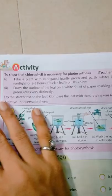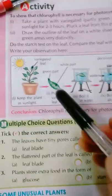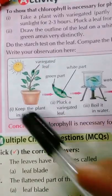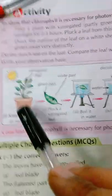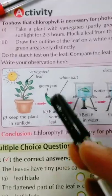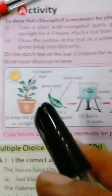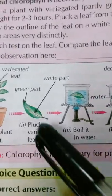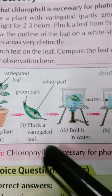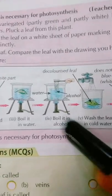The next activity is to show that chlorophyll is necessary for photosynthesis. We will take a healthy plant kept in sunlight and use a variegated leaf. A variegated leaf is partially green and partially white. You can see these leaves have green portions and white portions.